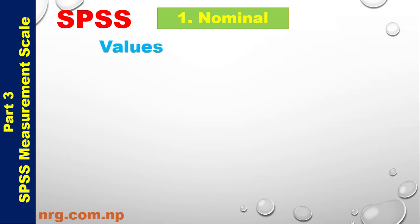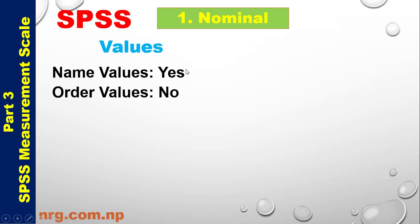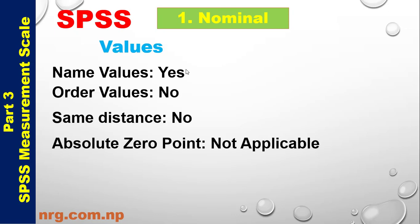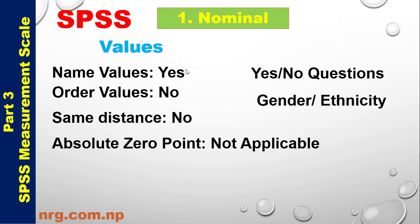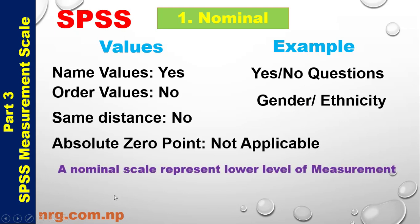Nominal Scale properties — Values have names (labels). Order: Not applicable. Same distance: Not applicable. Absolute Zero Point: Not applicable. Examples include Yes/No questions, Gender, Ethnicity, Country, and State. A Nominal Scale represents a lower level of measurement.